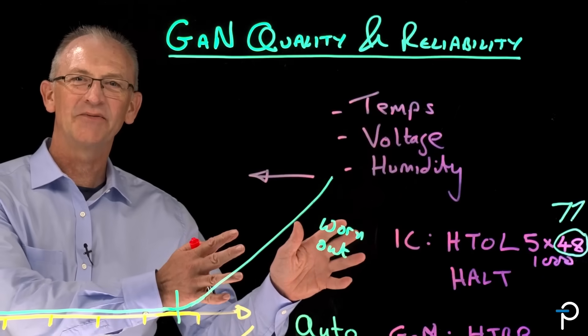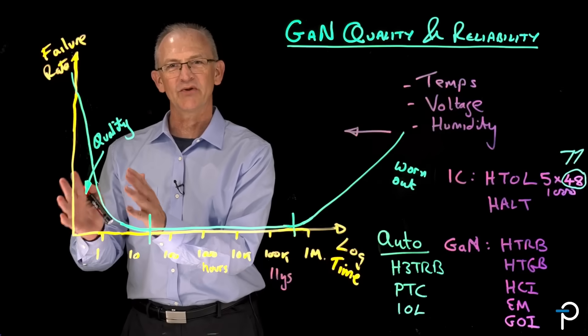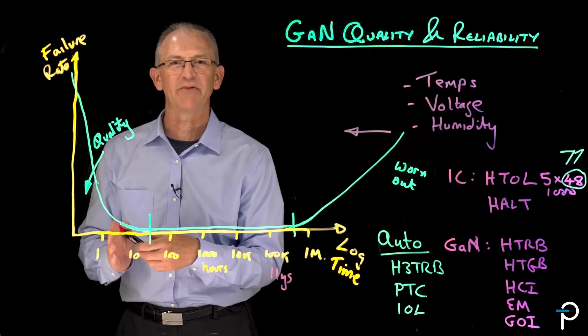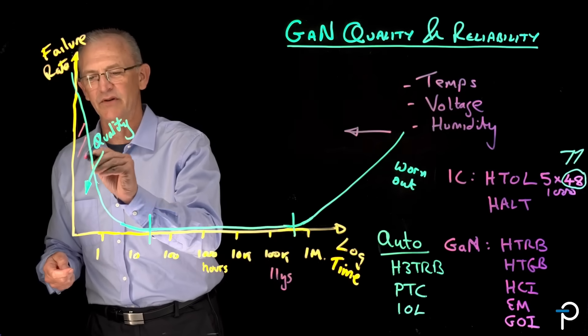So now we've taken care of the long term, the wear out mechanisms. Let's take a look at the short term, the manufacturing quality problems, the parts that failed in early life. And that's this area of the curve.